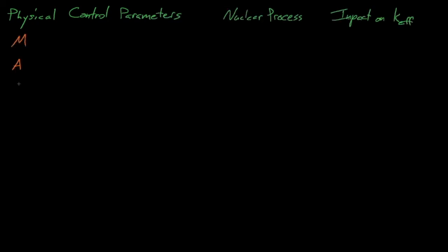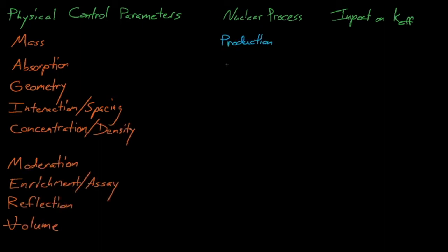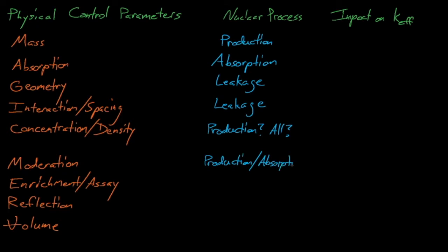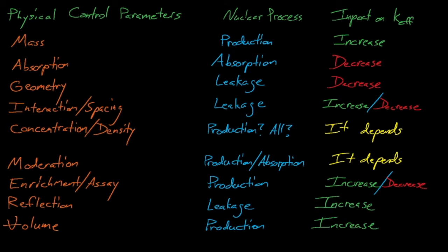So now that we've spent some time discussing how to design our controls in general, now we'll discuss what specific criticality parameters we want to control. Different sites might have different lists of physical control parameters, but the MAGIC MERV acronym does a good job of summarizing the different physical control parameters that we need to consider for an operation. Again, MAGIC MERV stands for mass, absorption, geometry, interaction or spacing, concentration or density, moderation, enrichment or assay, reflection, and volume. I've also listed which part of the Boltzmann transport equation each parameter affects, and how increasing each parameter will impact K effective. So now we'll briefly discuss how to develop controls for each of these parameters.